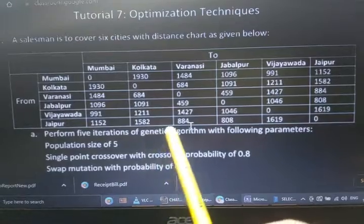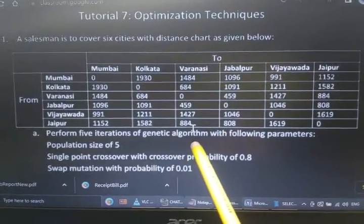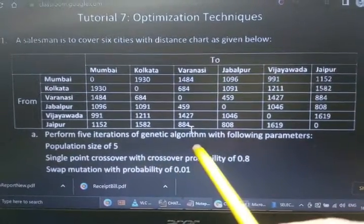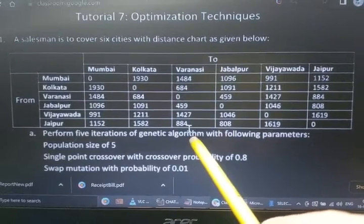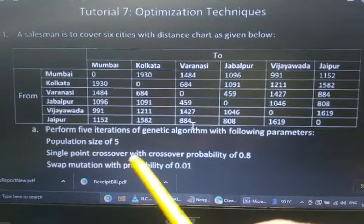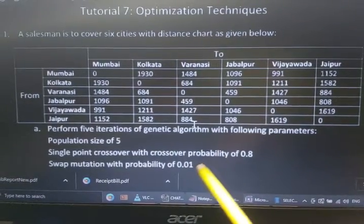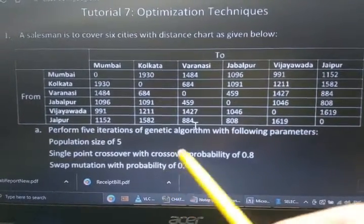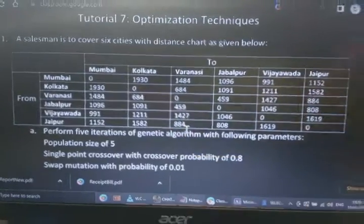We are not teaching genetic algorithm, we are solving this example with the constraints: population size 5, crossover probability 80%, and 1% mutation probability. With these parameters, let us begin answering the question.